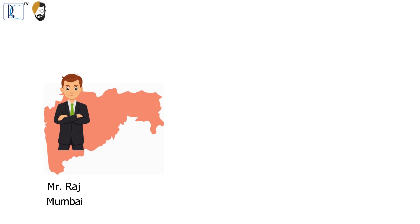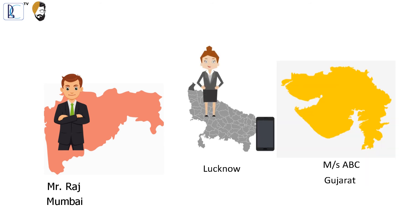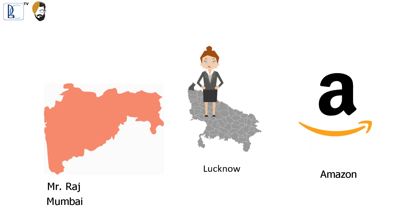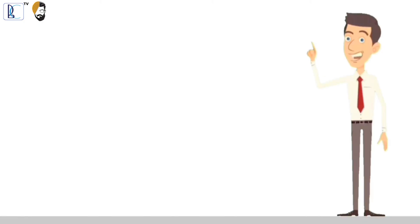Example — e-commerce sale: Mr. Raj of Mumbai, Maharashtra orders a mobile from Amazon to be delivered to his mother in Lucknow, UP as a gift. Ms. ABC, an online seller registered in Gujarat, processes the order and sends the mobile accordingly, and Mr. Raj is billed by Amazon. It will be assumed that the buyer in Mumbai has received the goods. The place of supply will be Mumbai, Maharashtra, and IGST will be charged.